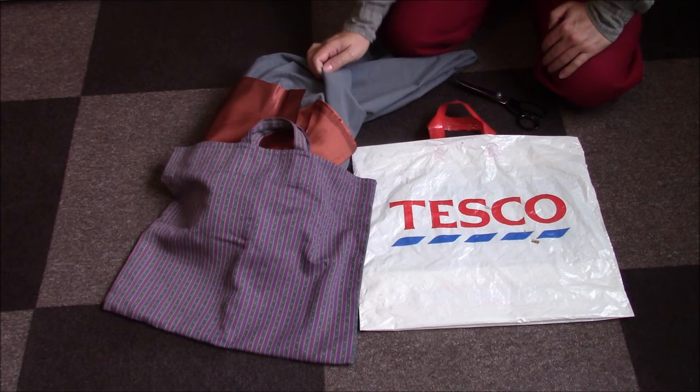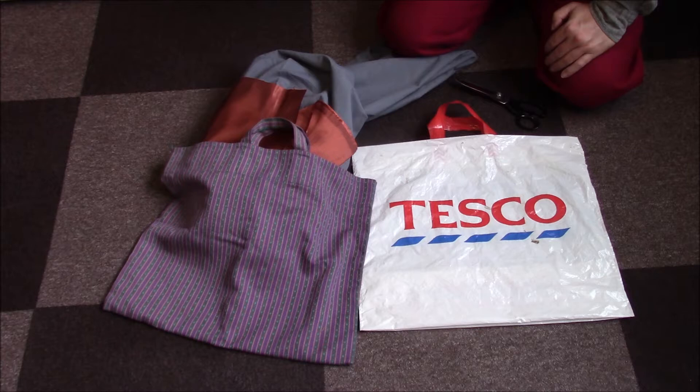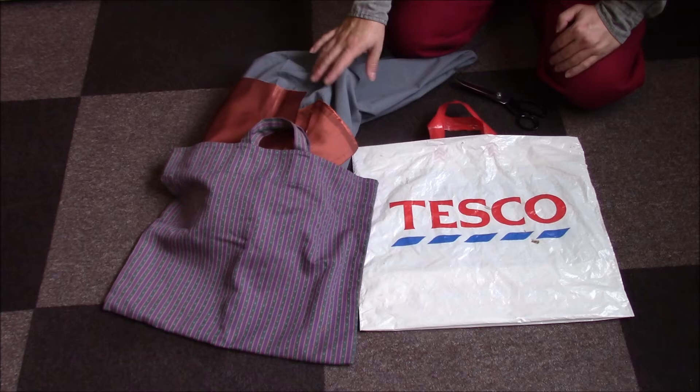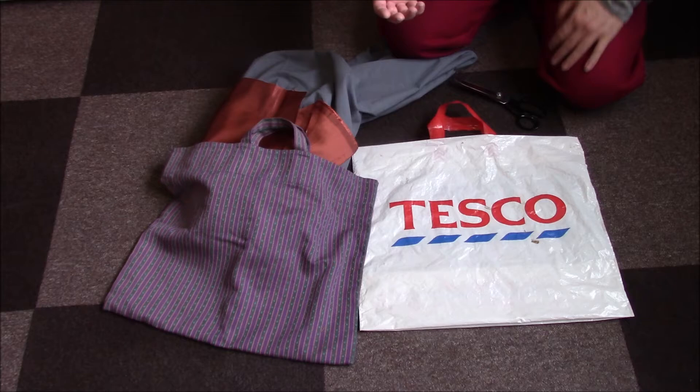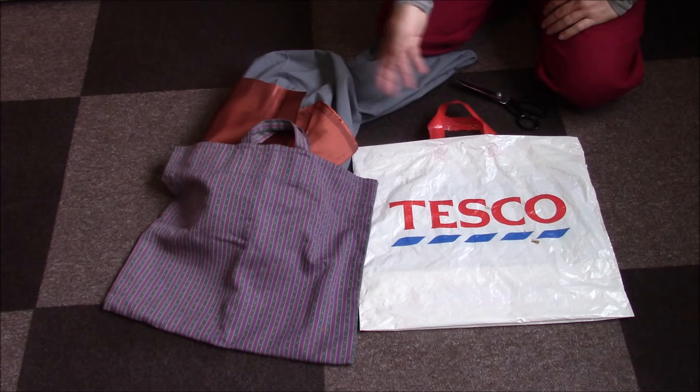You want a fairly sturdy fabric for this. You don't want to be using like shirt weight cotton or that sort of thing. You want something that doesn't stretch and ideally something that's fairly heavy weight. So you're looking at things like canvases. This is linen. Heavy duty cotton is very good for this. Some upholstery fabrics. This is a curtain fabric basically. So you want something that's a good moderate weight.